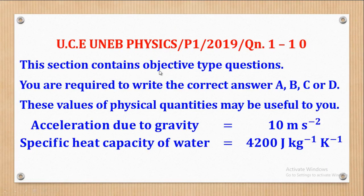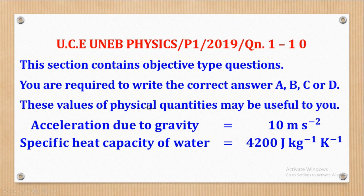This section contains objective type questions and you are required to write the correct answer A, B, C or D. There are four options but only one correct answer and that's what you are expected to write. These values of physical quantities may be useful to you: acceleration due to gravity should be taken as 10 meters per second squared unless stated otherwise, and specific heat capacity of water is 4200 J per kilogram per Kelvin. Where necessary you can use these constants.